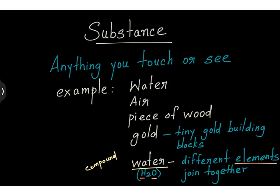Other stuff, like water, is made up of different elements like hydrogen and oxygen. The whole water molecule is made up of two elements, and that is why it's called a compound. The chemical formula for water is H2O, indicating that each water molecule consists of two hydrogen atoms and one oxygen atom chemically bonded together.